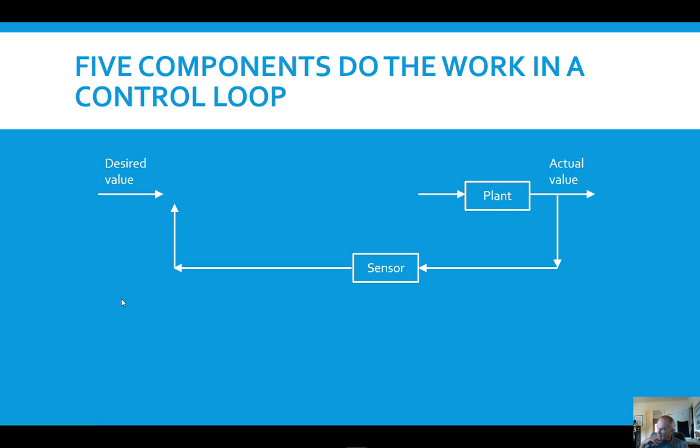We are sensing a value of a thing. If it were the speed of a car then the car is called the plant. This is a funny name for a car but it comes from the early days of controls where the control theory was developed for industrial plants, for example for a power plant. So that part of the loop, this component, is called a plant and it's a funny thing to call a car a plant but in controls jargon that's what it is.